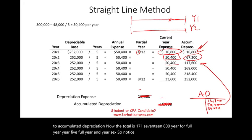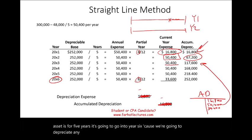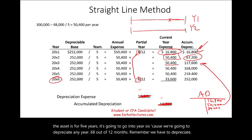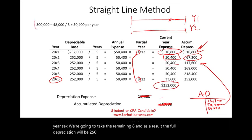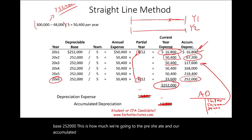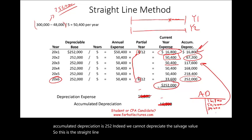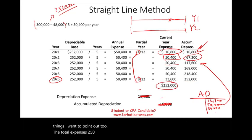Notice what happens: although the asset is for five years, it's going to go into year six because in year six we depreciate eight out of 12 months. We have to depreciate the asset for the full five years — in year one we only took four months, so in year six we take the remaining eight. The full depreciation will be $252,000, which is the depreciable base. Accumulated depreciation is $252,000. We cannot depreciate the salvage value. The total expense over six years is $252,000.